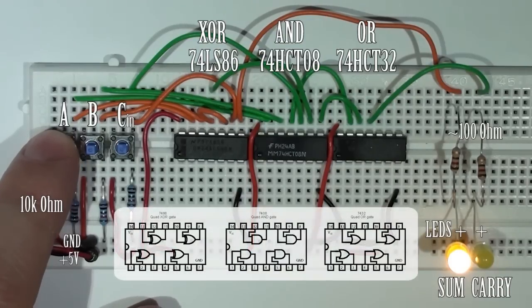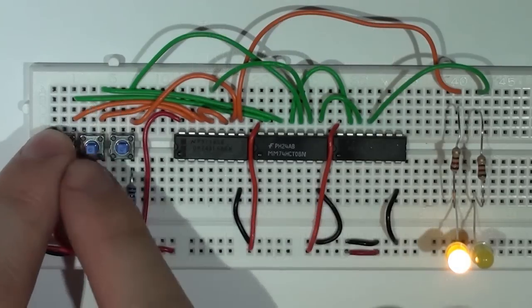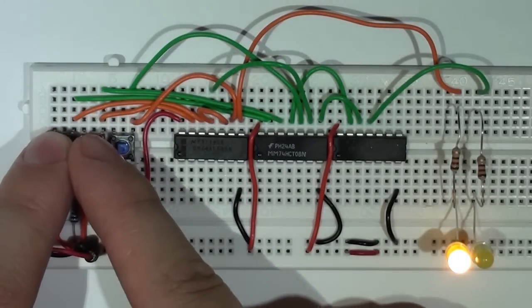The nice thing about full adders is that they can be cascaded together, so we can create a 4-bit full adder circuit or an 8-bit full adder circuit just by cascading the adders together.